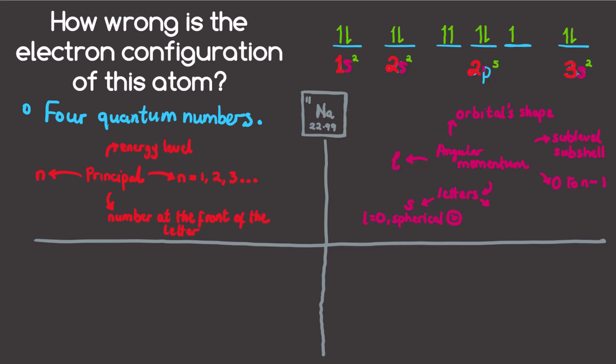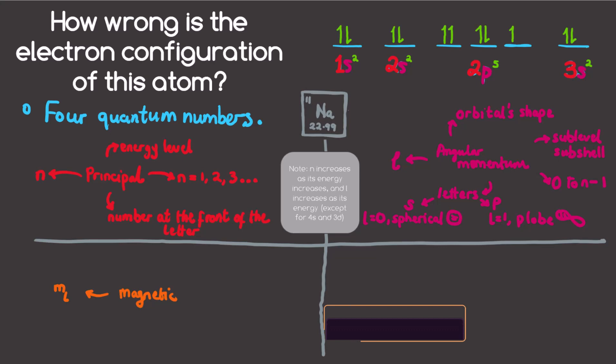Note that n increases as its energy increases, and l increases as its energy increases, except for the 4s and 3d. Third is the magnetic quantum number, notated as m subscript l.